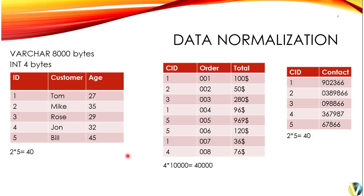In this next slide, we create an additional column in our customer table called ID — an integer column. We assign a unique ID to each customer: 1 for Tom, 2 for Mike, 3 for Rose, 4 for John, and 5 for Bill. We then replace customer name with customer ID in the other tables, and we do the same for the contact table.